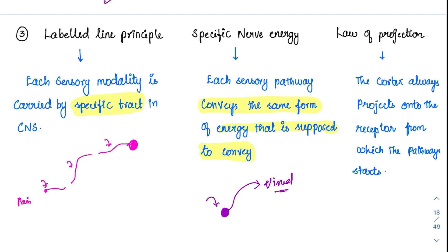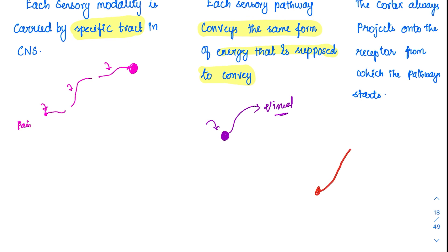Now coming to the law of projection. This law states that the cortex always projects onto the receptor from which the pathway starts. For example, if a pathway is reaching the brain and an injury completely cuts this tract, when there is a stimulus at the stump, the person will feel as if the sensation is coming from the original part of the body — even though that part is cut.